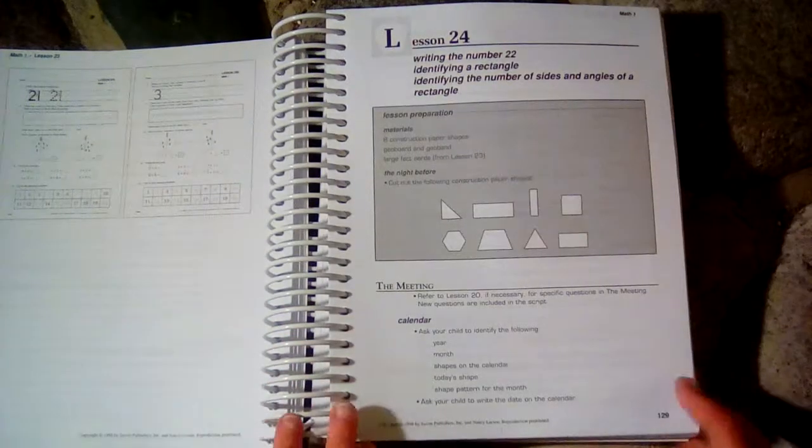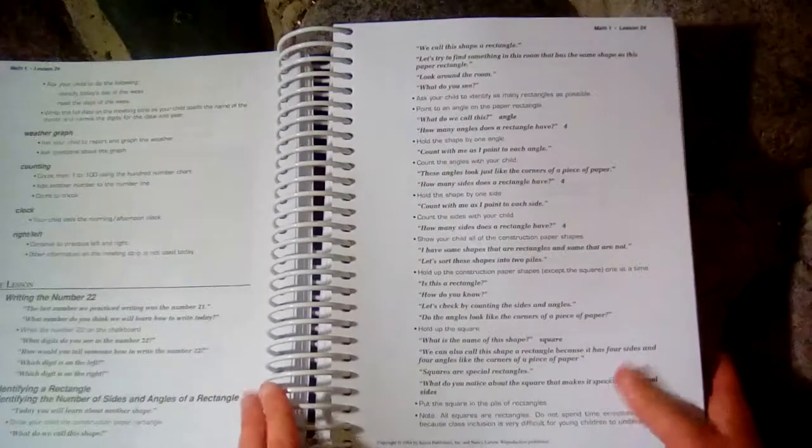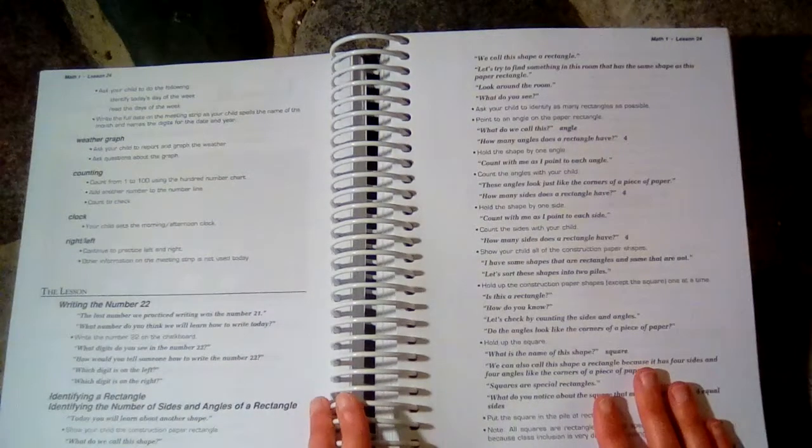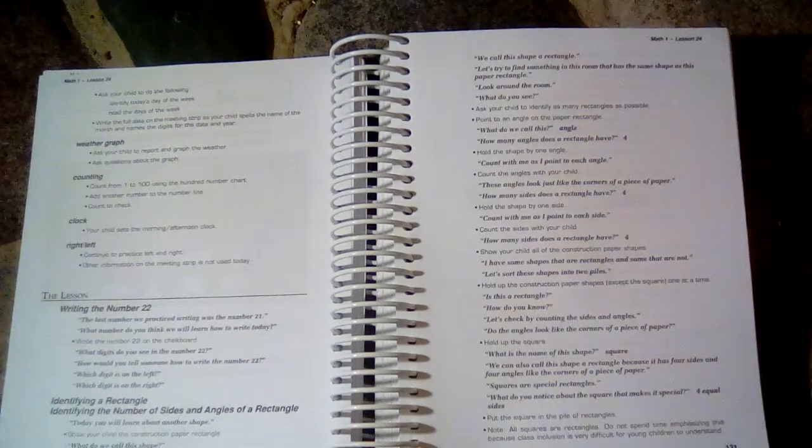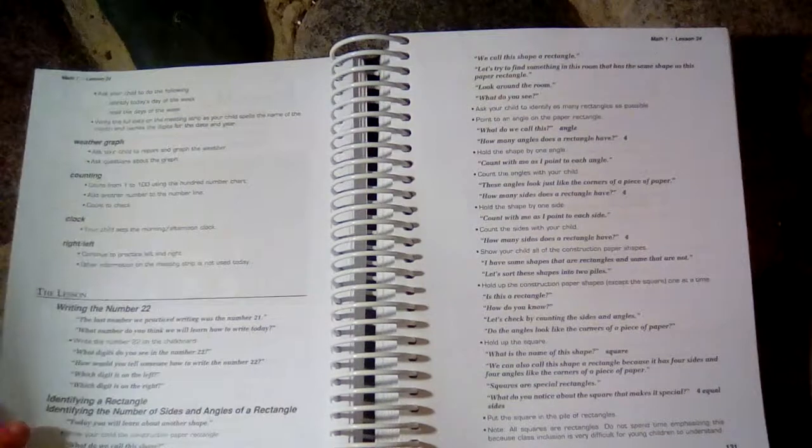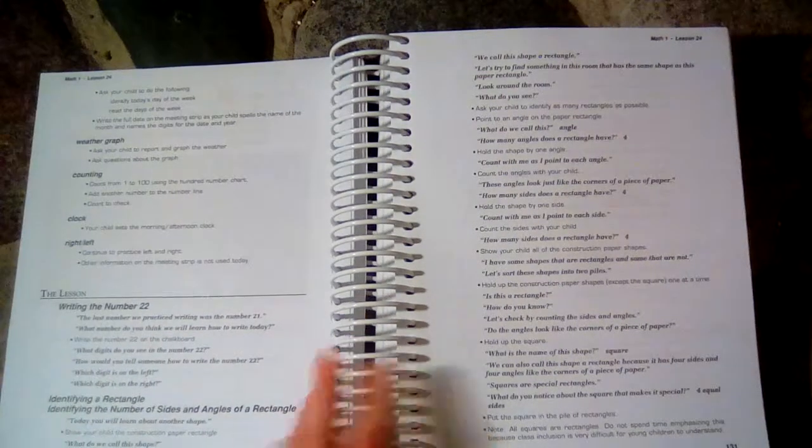So this is the kind of thing that is in the meeting book that you will do each day that you do Math 1. Also during the meeting, you will ask questions about right and left, about the clock. Sometimes there's some counting of coins, and there's just counting like by twos, fives, tens, and things like that.